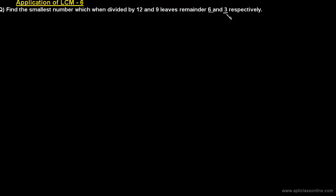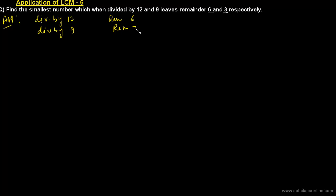and when it is divided by 9, the remainder is 3. But is there any similarity here? If you take the difference between the divisor and the remainder: 12 minus 6 equals 6, and 9 minus 3 also equals 6. So the difference between the divisor and the remainder is the same in both cases.